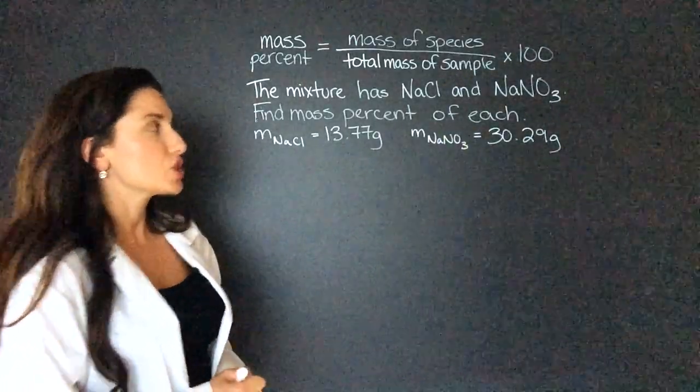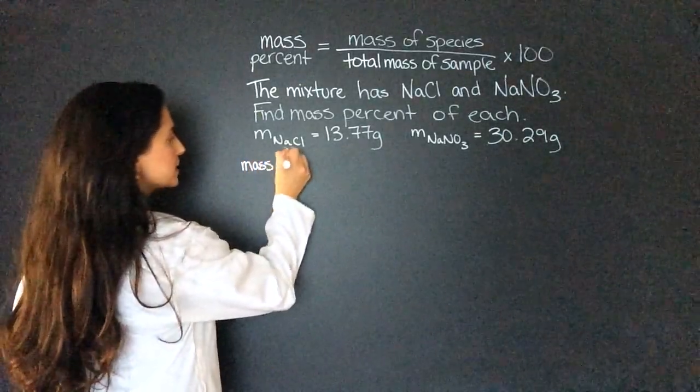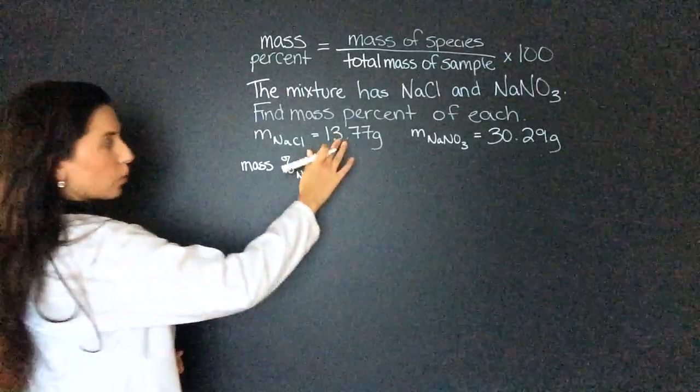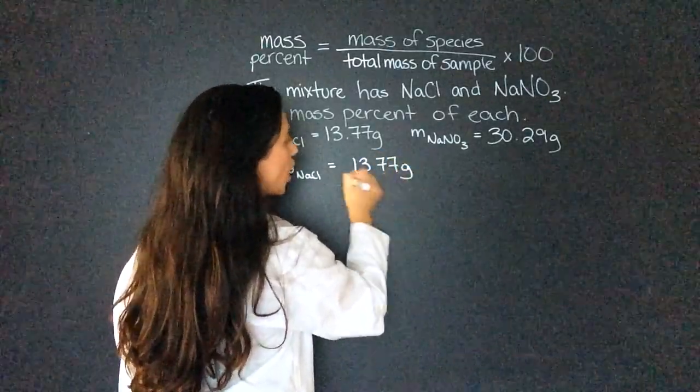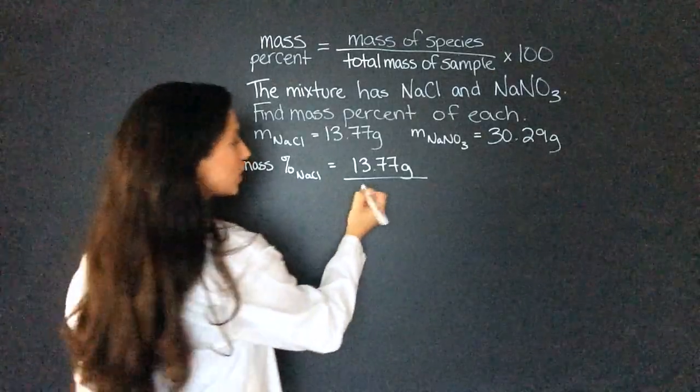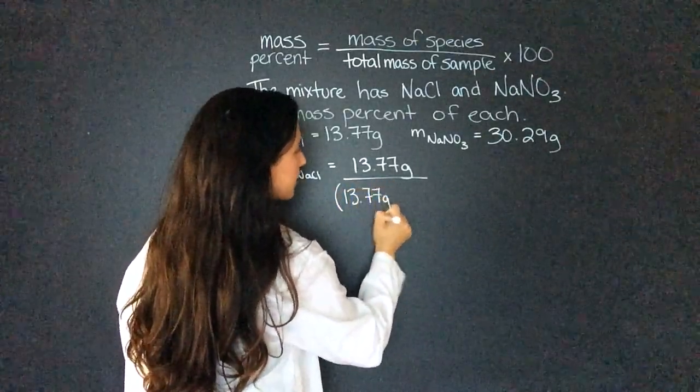mass of each one. Let's start with sodium chloride. The mass percent of NaCl is going to equal the mass, which is 13.77 grams, over the total mass of the mixture. So I'm going to add 13.77 grams plus